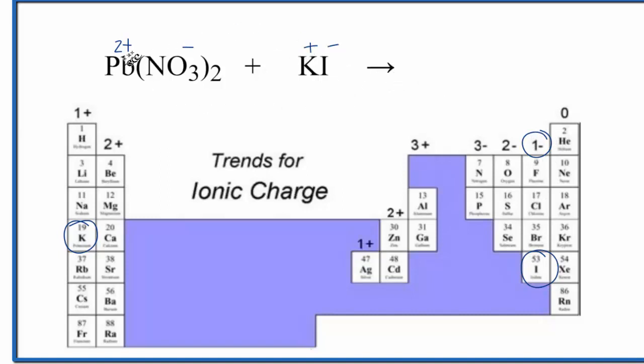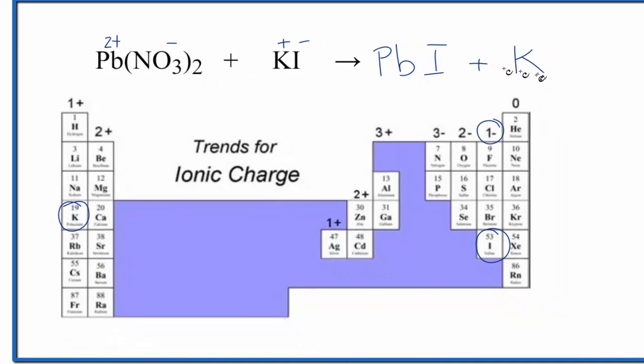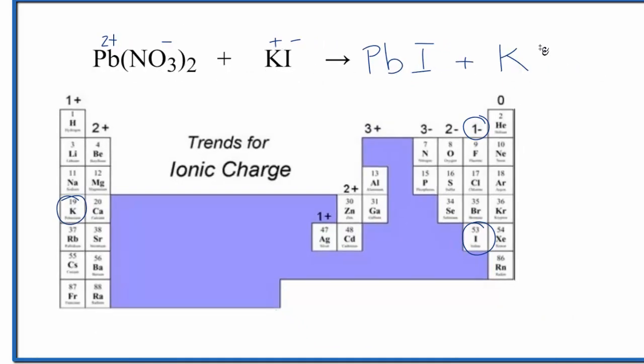So if the positive ions switch places, I would have Pb would go with the negative I, and then the potassium, we write the metal first, would go with the negative nitrate, NO3 minus. Let's clean this up.